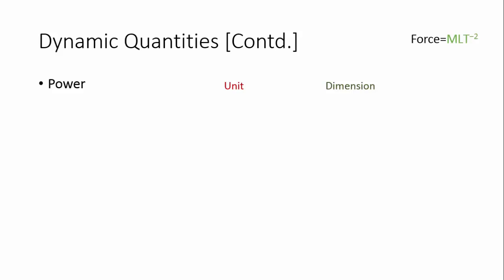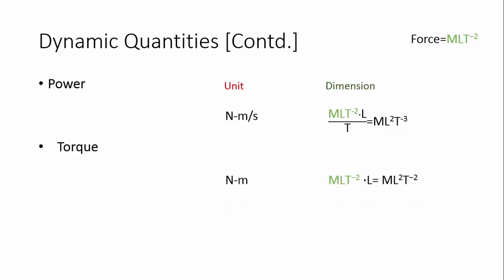Power has a unit of Newton·meter per second: Newton is M·L·T to the power minus 2, times meter L, divided by second T, giving M·L²·T to the power minus 3. Torque has a unit of Newton·meter: Newton is M·L·T to the power minus 2 into L, giving M·L²·T to the power minus 2.